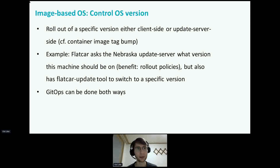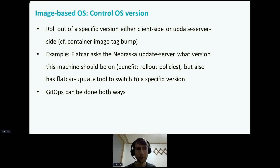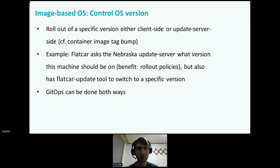Let's see more closely how we can declaratively control the OS version with an image-based OS and in-place updates. This version comes from a release that happens on a cadence, providing both the full image for fresh deployment and the update payload for in-place updates. The rollout is either client-side or update-server-side — similar to the container image registry where the tag is bumped. For example, Flatcar asks the Nebraska update server what version this machine should be on, which gives the benefit of global rollout policies. For purely client-side control, Flatcar also has the Flatcar update tool to switch to a specific version. You can automate both scenarios with GitOps — either the Git configuration controls what version Nebraska announces, or it controls the parameter for Flatcar update directly.